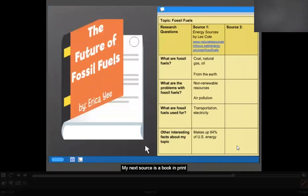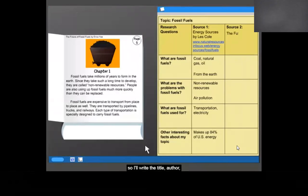My next source is a book in print, so I'll write the title, author, and page number of my second source in my chart. I'll repeat my process for taking notes.